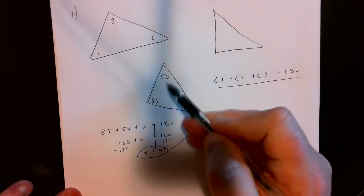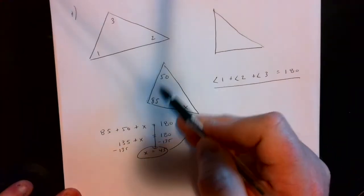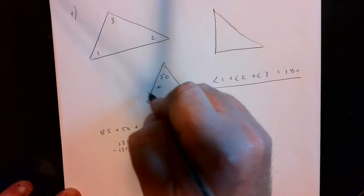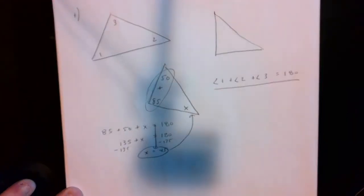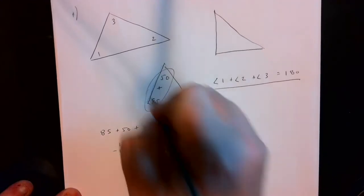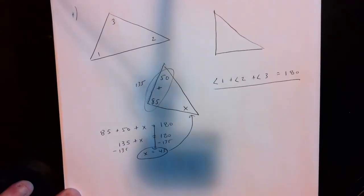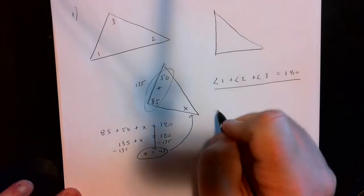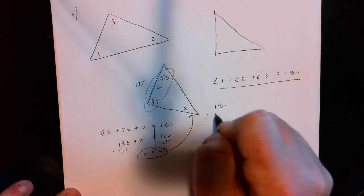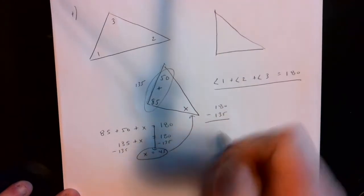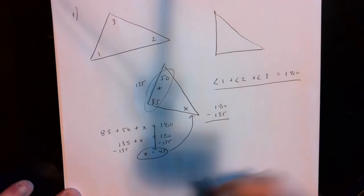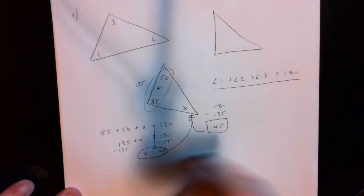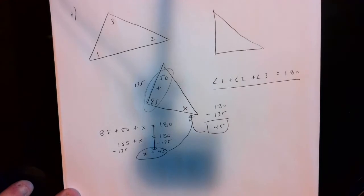In equation form, all three angles have to equal 180. So if we add the two known angles together — 85 plus 50 equals 135 — then we take 180 minus 135, which gives us 45. That's the same way of doing it, just without having to write out the full equation.